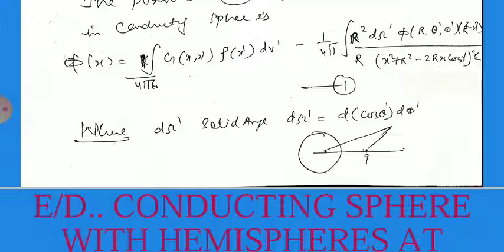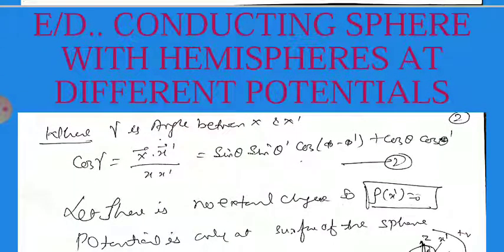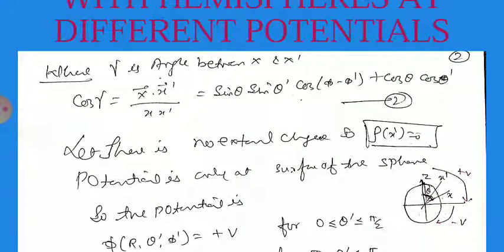As previously calculated, the second term relates to the image and the first term to the source charge. Here dΩ' is the solid angle, equal to d(cos θ') dφ'. Gamma (γ) is the angle between X and X', where X is the observer point and X' is the source point. So cos γ = (X⃗ · X⃗') / (|X||X'|) = sin θ sin θ' cos(φ − φ') + cos θ cos θ'. In our problem there is no external source, so the volume charge density ρ(X') = 0, making the first term zero.